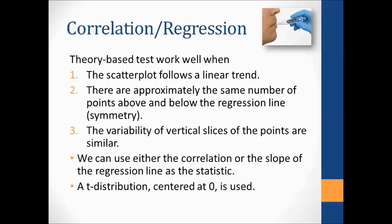Theory-based tests for correlation are a bit different. We're really doing a theory-based test for the slope of the regression line. The scatter plot should follow a linear trend — always heading upward or downward generally. There should be approximately the same number of points above and below the regression line, and the variability of vertical slices should be similar — you shouldn't see fanning out or narrowing in. When running this test, you can use either correlation or the slope as your statistic. Just like with means, a t-distribution is used, centered at zero — very similar to a single mean test.